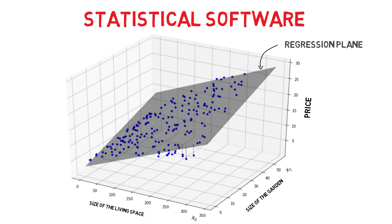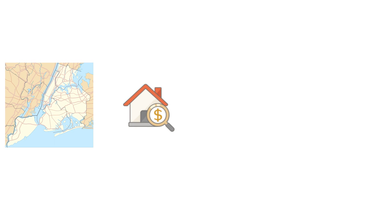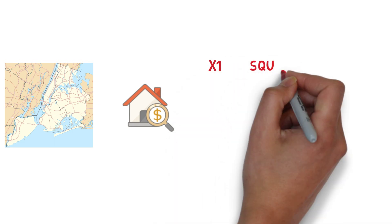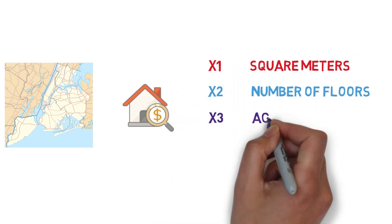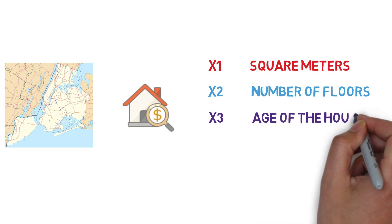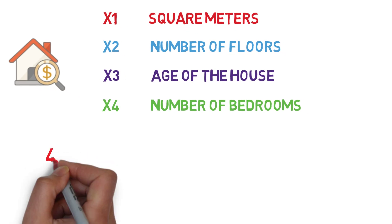Let's take a look at a concrete example. Let's fit a multiple linear regression model to a hypothetical dataset that consists of housing prices for a certain neighborhood. The dataset consists of 4 independent variables: total square meters of the house, number of floors, age of the house, and the number of bedrooms.